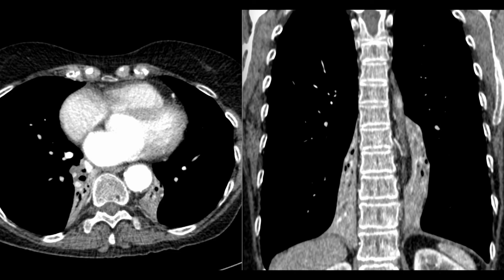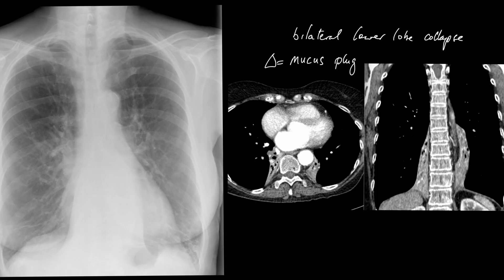Here is the CT of the same patient, nicely showing collapse of the right lower lobe and simultaneously collapse of the left lower lobe. There can't be an anatomical explanation for this appearance on the basis of an endobronchial tumour — it just wouldn't work. So the more likely diagnosis would be a mucus plug, and in fact that was the diagnosis in this case.